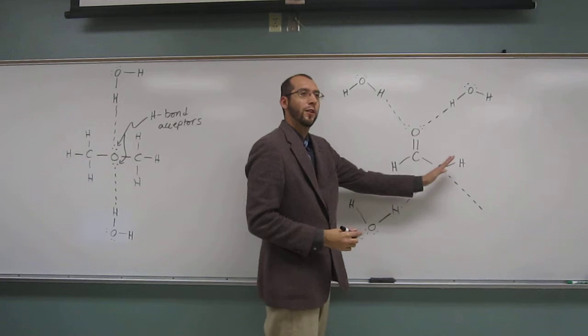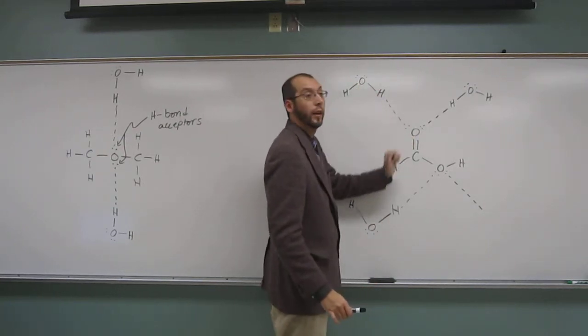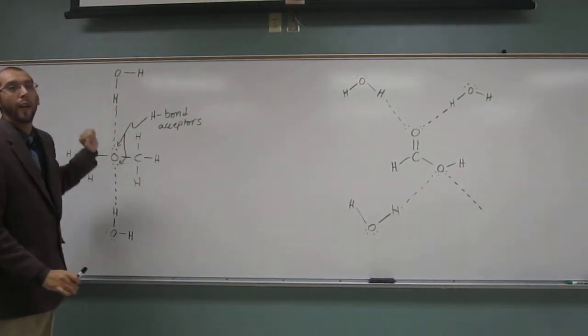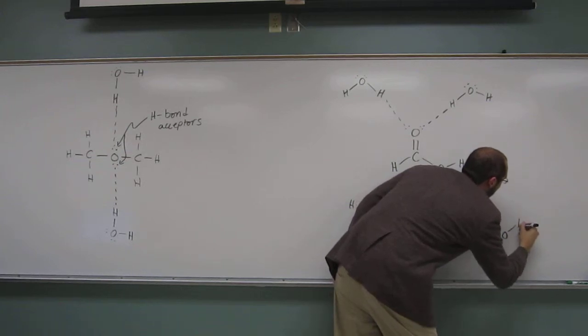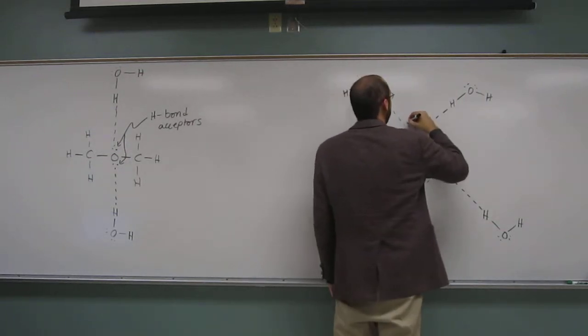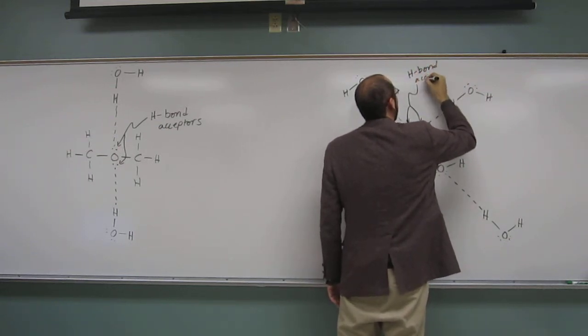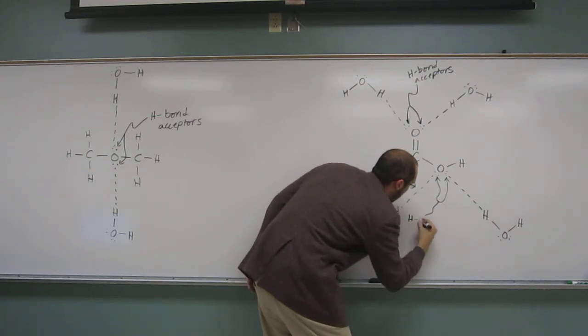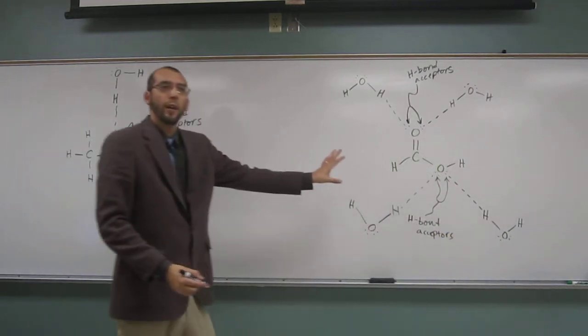Remember what we said about hydrogen bonds? They have to be in line. That's why I'm drawing them like that, the three atoms in line. Okay? One, two, three atoms in line. One, two, three atoms in line. Okay? One, two, three atoms in line. Okay? I'm doing it on purpose. Like that. Okay? So, two more acceptors. Let's identify these. Is everybody okay with what I've done so far?